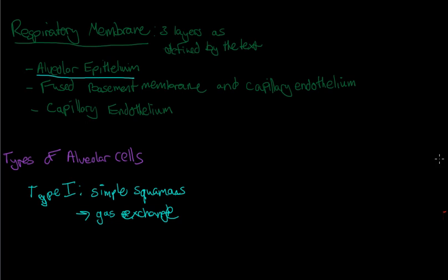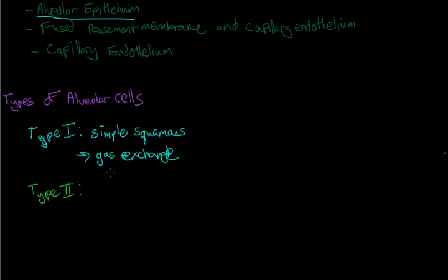And then type 2. Type 2 is going to be simple cuboidal. If you remember, we talked about simple cuboidal is good for secretion. And this is where your alveoli secrete surfactant.